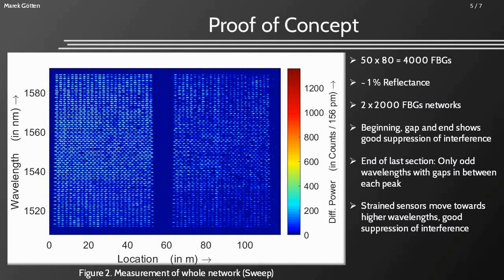Now I can show you the proof of concept. In this plot you can see all 4,000 sensors — 80 different wavelengths and 50 sections. Our network actually consists of two 2,000-sensor networks spliced together. The diagram shows a good suppression of interference at the beginning of the first network, in between both networks, and at the end. When CDM does not work properly, interference of sensors at these wavelengths should appear. You also see the up and down movement of the Bragg wavelengths within a section.